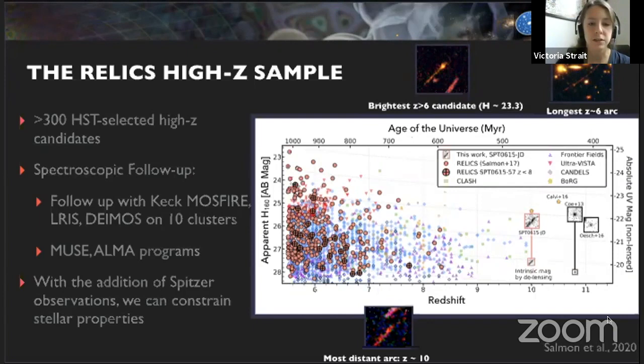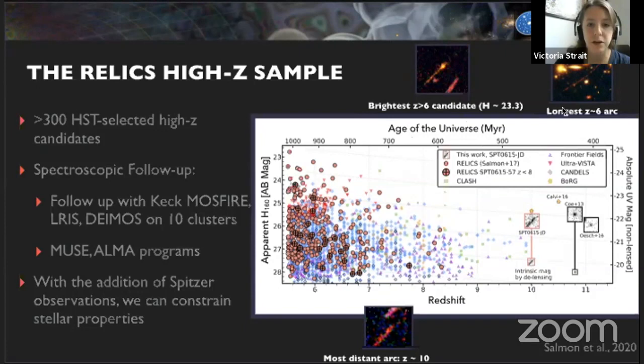The sample spans from redshift 5.5 to about 10 and several orders of magnitude in brightness. Dan Coe has a student, Brian Welch, who's working on characterizing the properties of three really cool objects from the sample: the brightest redshift 6 candidate, which is an arc; the longest redshift 6 arc; and the most distant arc, which is a redshift 10 object.